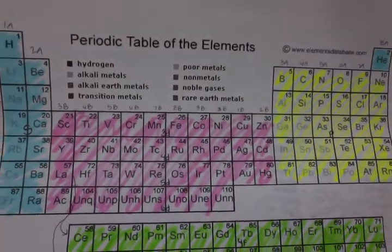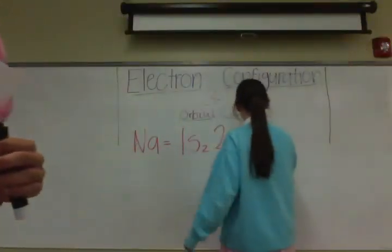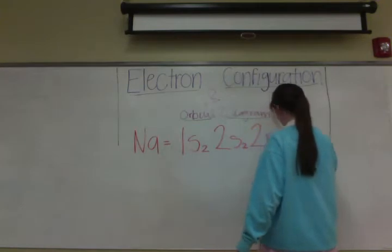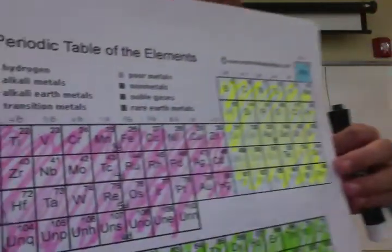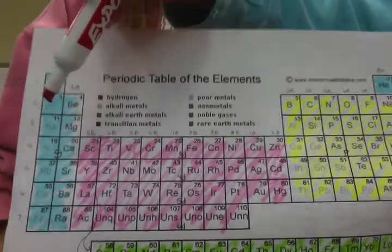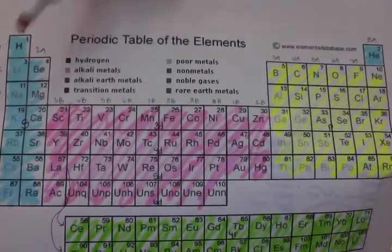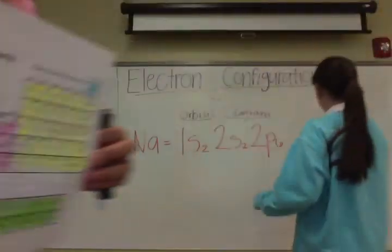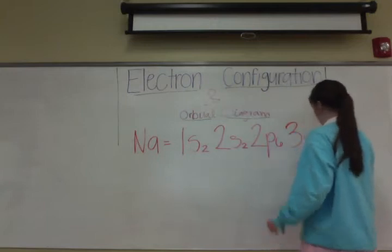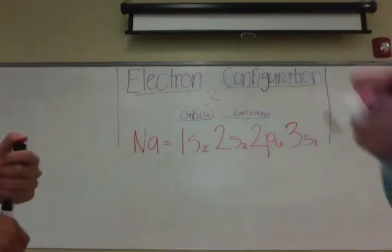The yellow is P, and there are six of those, so it would be 2p⁶. Sodium is the first one in row three, so it would just be 3s¹. So the full electron configuration for sodium is 1s² 2s² 2p⁶ 3s¹.